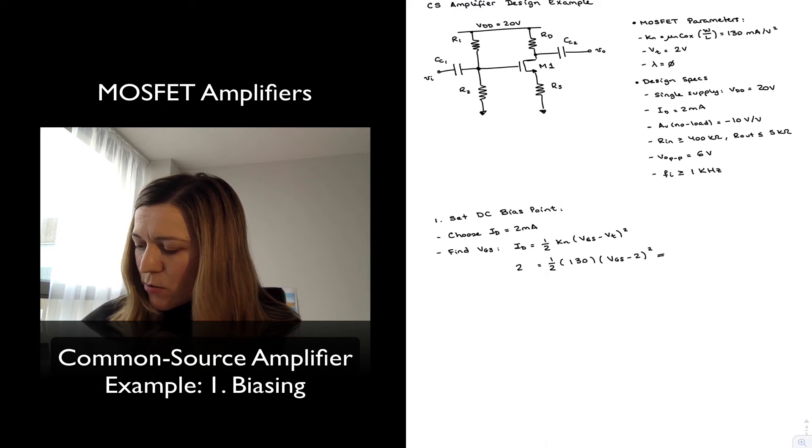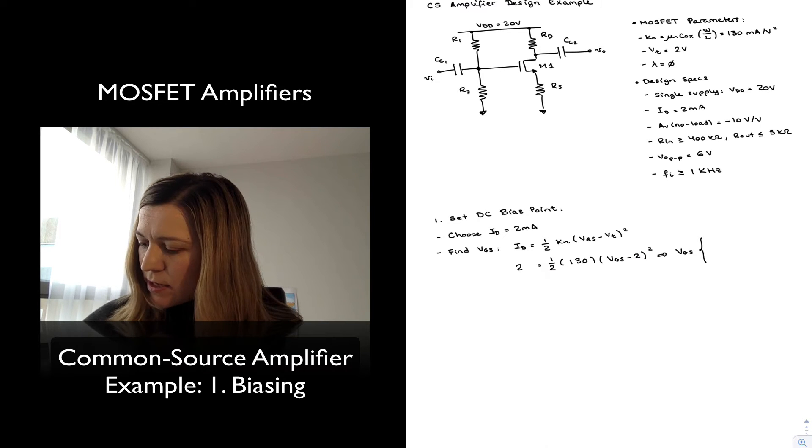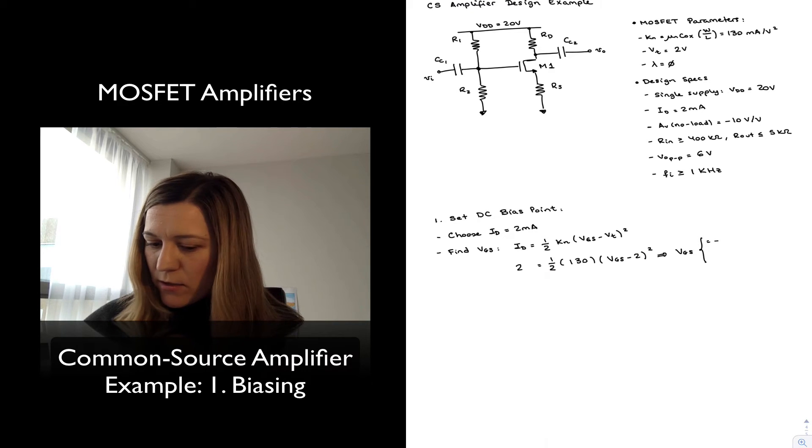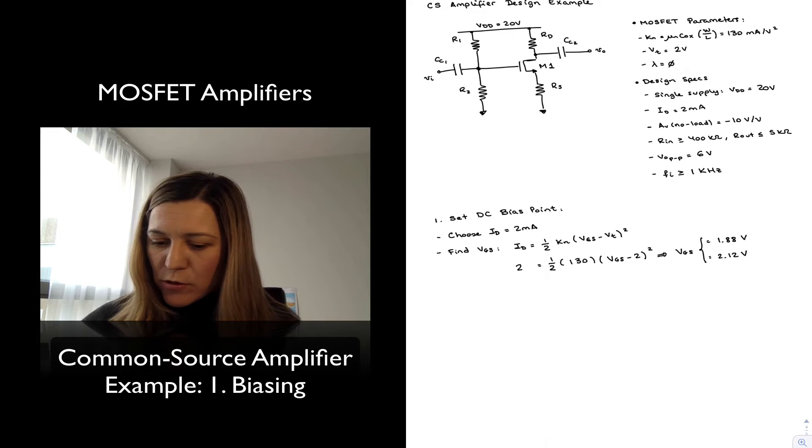Since this is a quadratic equation, I'm going to get two possible values for my VGS. One of them is that VGS is equal to 1.88 volts, and the other is that it is equal to 2.12 volts.